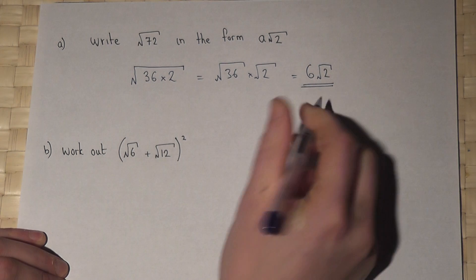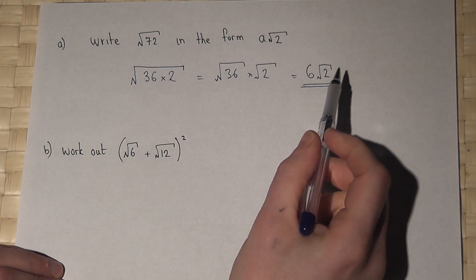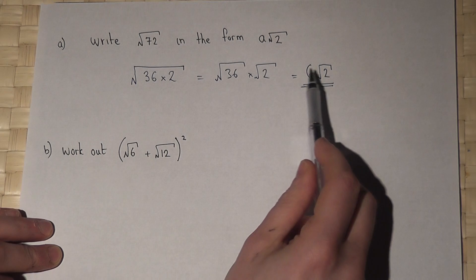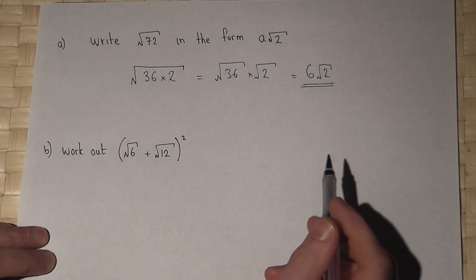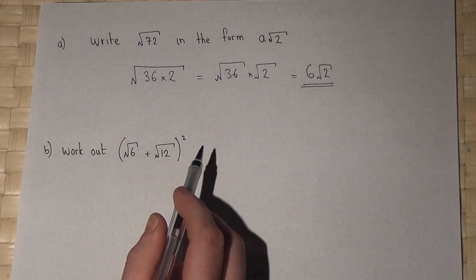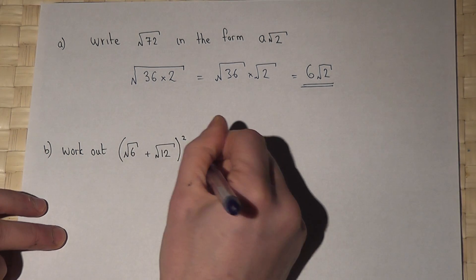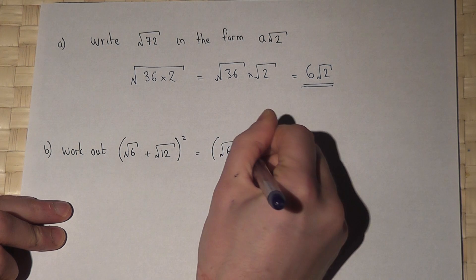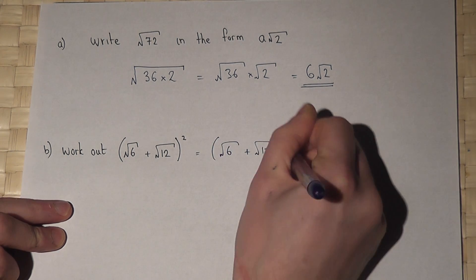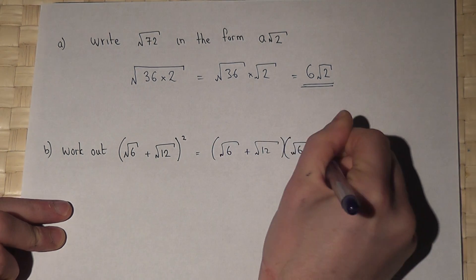So the answer is just 6 lots of root 2. I've therefore written this in the form a root 2. In the second part we're asked to expand this expression here. Now a square just means to times together the bracket by itself.